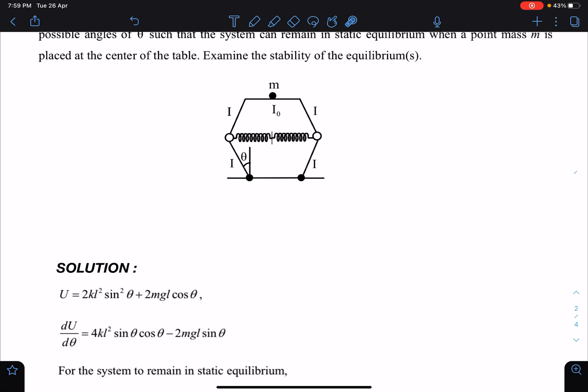So you can see half k times delta x, that is 2l sin theta, whole square. Now this is my spring potential energy. So you can see I have written as 2kl² sin²θ. Similarly, this height mg h is the potential energy, which is mg times 2l cos theta. Now I am getting potential energy as a function of theta. When I do dU/dθ,